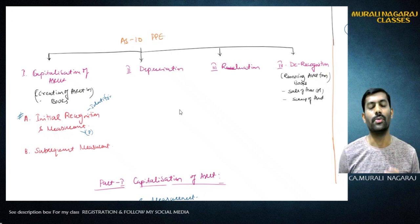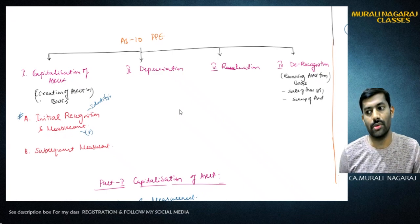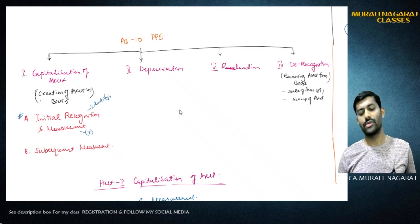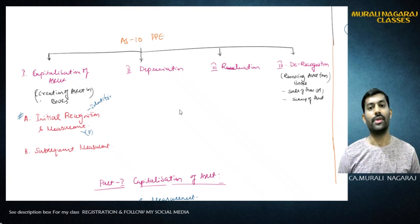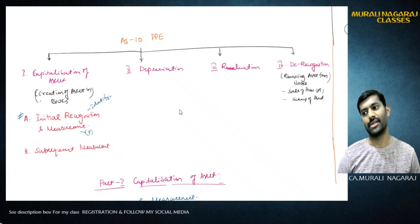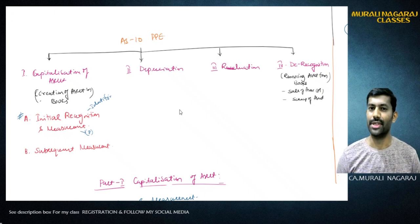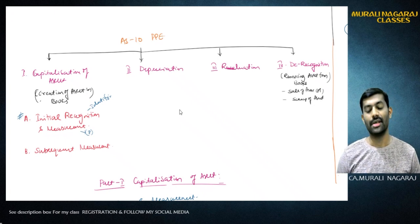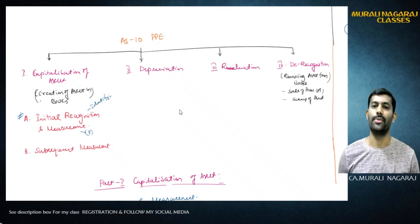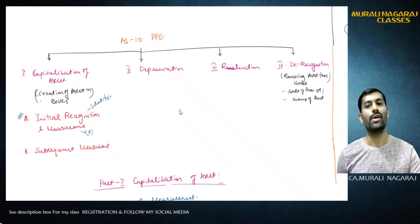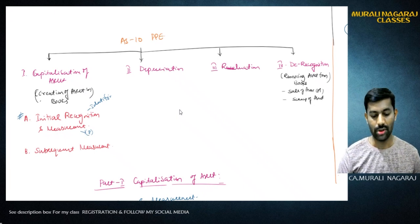Relating to the cost component of PPE in Property, Plant and Equipment, we have four parts in the standard: one is capitalization of an asset, second is depreciation, third is revaluation of assets and liabilities, and fourth is derecognition of property, plant and equipment. Today we are covering the first component.